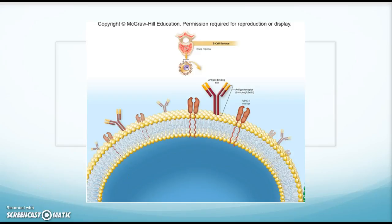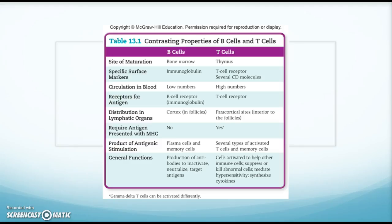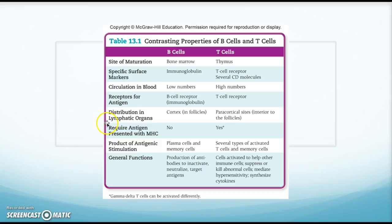This table gives the differences between B cells and T cells, looking at site of maturation, specific surface markers, and which antigen receptors are present. For B cells it's immunoglobulin — those antibody-like molecules. For T cells we have T cell receptors and the CD molecules: CD4 on T helper cells and CD8 on cytotoxic cells. Remember it is the T cells that require antigen presented with MHC.